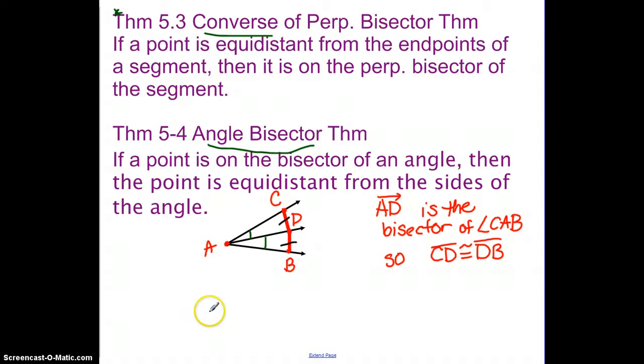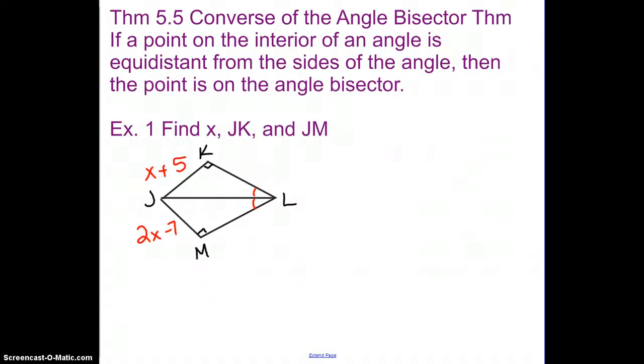So in our first problem, we have this piece right here where they want us to find X, JK, and JM. Now I know when I have several things to find, I actually just make an answer box over here. One of the things that's nice about this is once the answer box is filled, you will know that you've solved everything that you need to solve in this one.